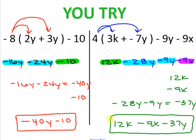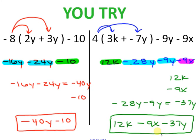For the first problem, after distributing you should have gotten negative 16y minus 24y minus 10, and when you combine like terms you should have gotten negative 40y minus 10. For the second problem, after distributing you should have gotten 12k minus 28y minus 9 minus x, and after combining like terms you should have gotten 12k minus 9x minus 37y.